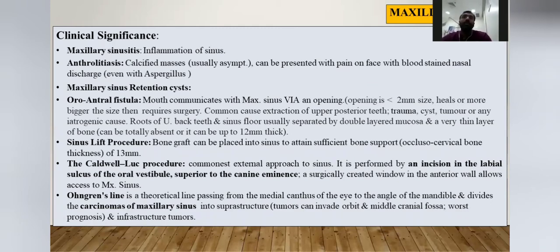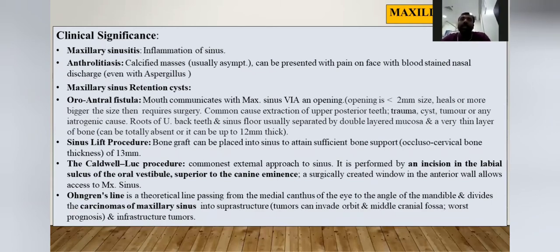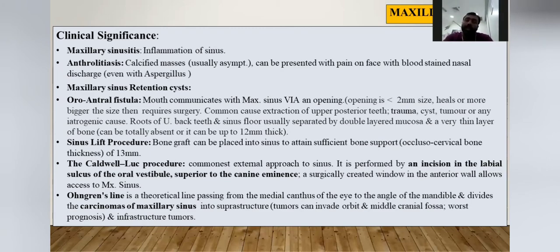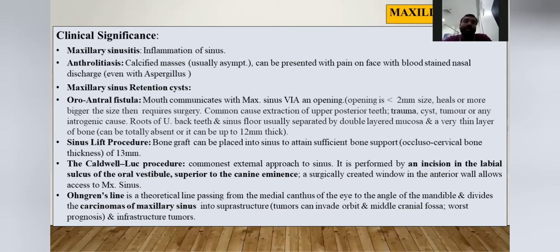Pathological conditions of the maxillary sinus include: first, maxillary sinusitis — mainly due to the drainage problem since the ostium lies above the sinus floor. Second, anthrolithiasis — formation of a stone inside the maxillary sinus. A case encountered during postgraduation involved calcified material matching aspergillus fungal infection; blood-stained nasal discharge can be a presenting feature of such aspergillus infection or calcified deposits.